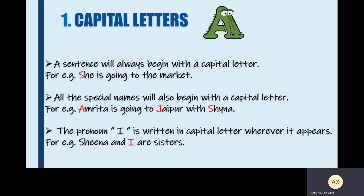The third point is that the pronoun I is always written in capital letter wherever it appears, whether it is in the beginning of the sentence or in between the sentence. I is supposed to be always in capital letter. For example, 'Sheena and I are sisters.' Here I is in between the sentence — it doesn't matter. I has to always be in capital letter.